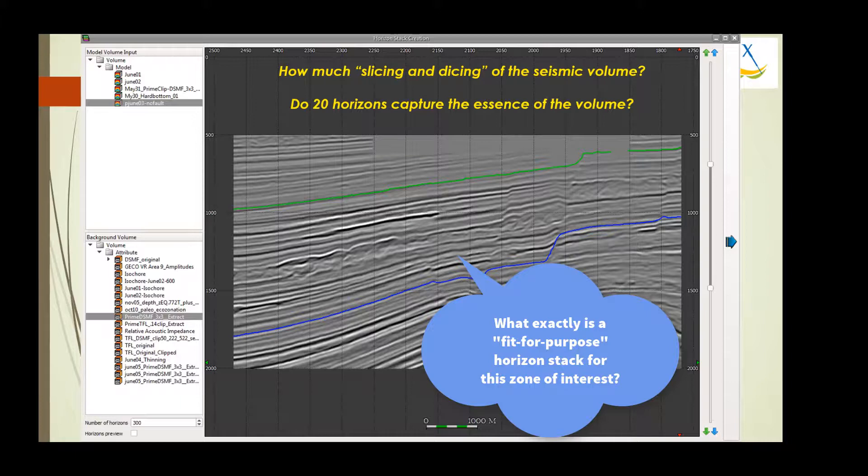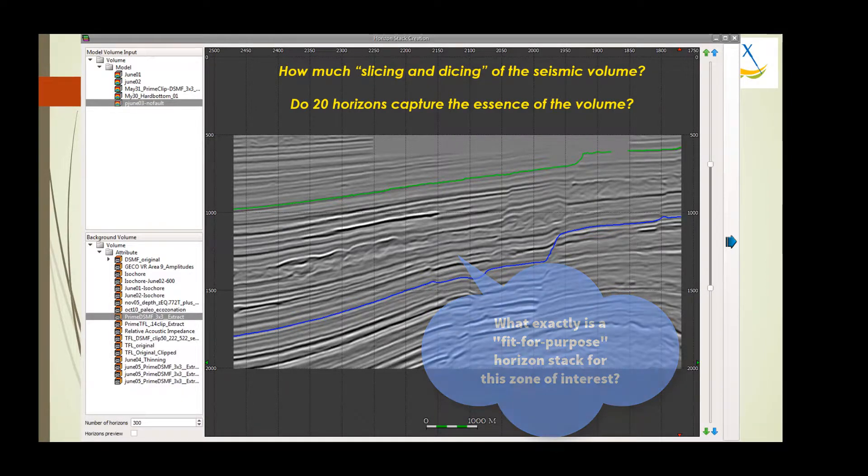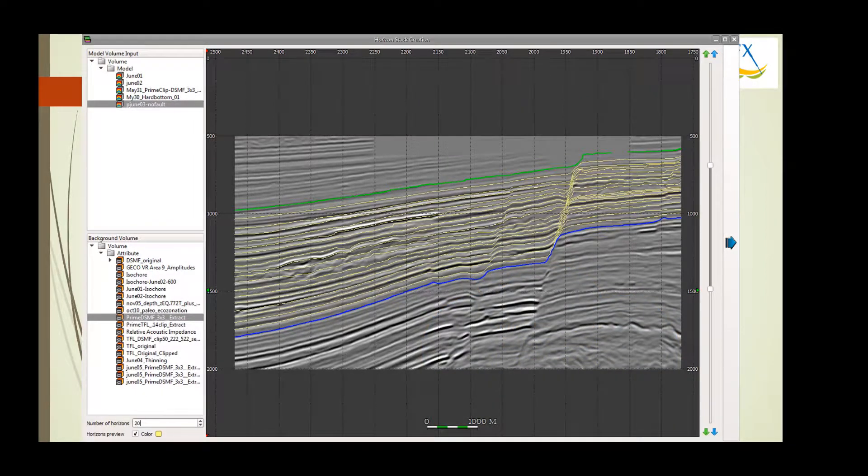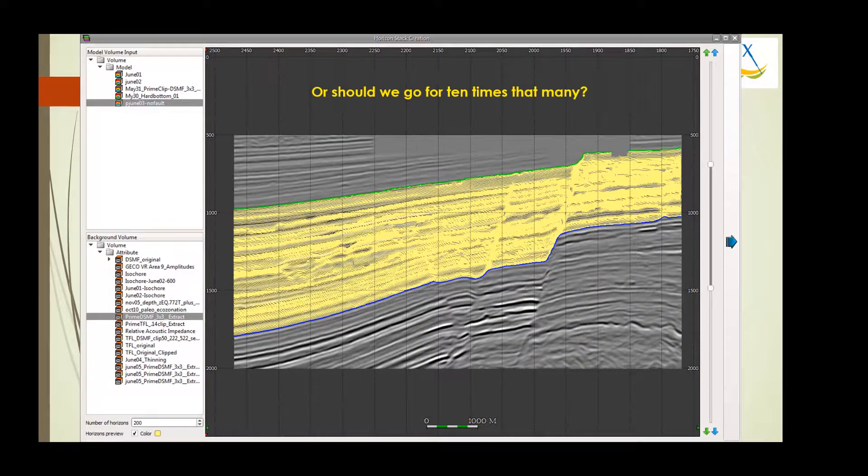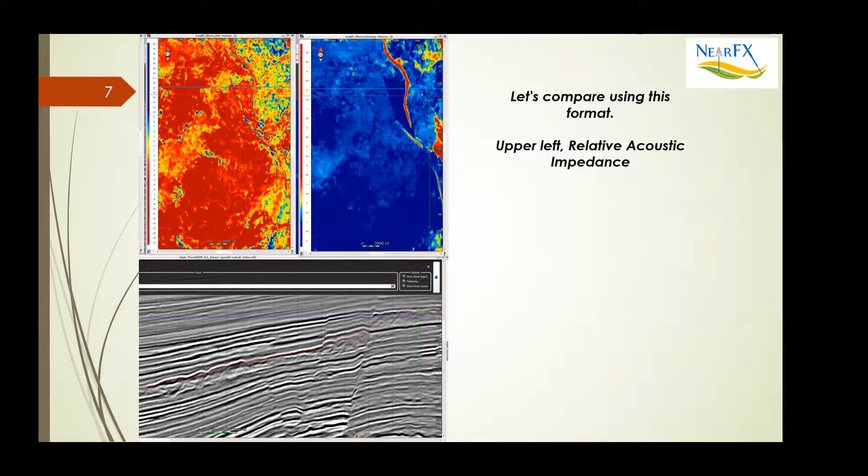So the question becomes, when you're interpreting a zone of interest, between in this case the green and the blue horizons, how do you make the horizon stacks from which you create the various attribute maps? Do you take 20 slices through that, or do you take 200 slices through that?